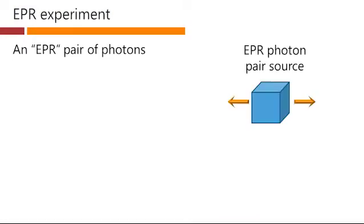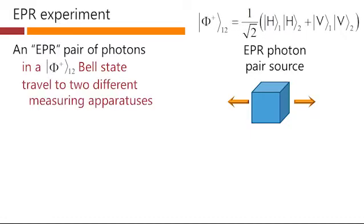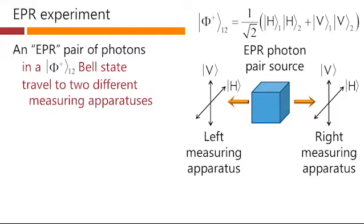An EPR pair of photons — here we have a source and our photons in this Bell state — travel to two different measuring apparatuses. Here's our left measuring apparatus with polarizers set for horizontal and vertical to separate out photons, and here's our right measuring apparatus that similarly has polarizers set to horizontal and vertical. The axes of these apparatuses are aligned with one another.